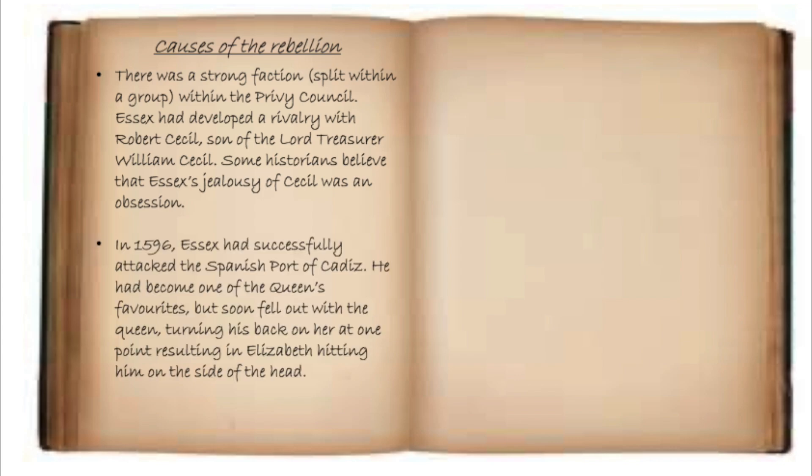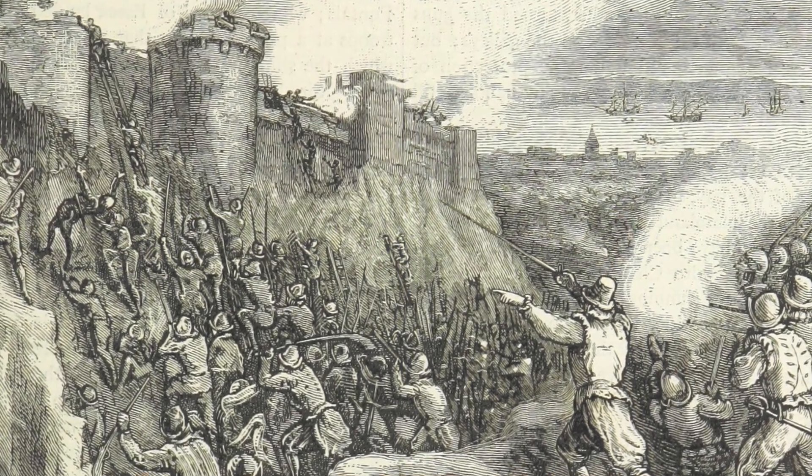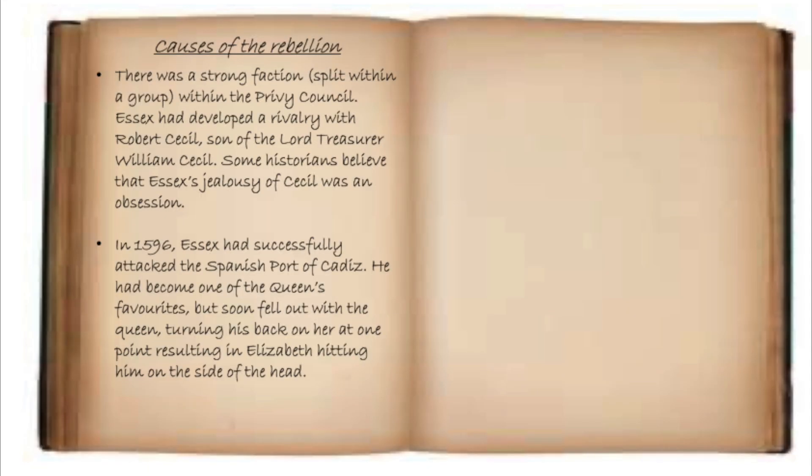There was a strong faction within the Privy Council. Essex had developed a rivalry with Robert Cecil, the son of Lord Treasurer William Cecil. Some historians believe that Essex's jealousy of Cecil was an obsession. In 1596, Essex had successfully attacked the Spanish port of Cadiz and had become one of the Queen's favourites, but soon fell out with her — at one point turning his back on her, resulting in the Queen hitting him on the side of the head.